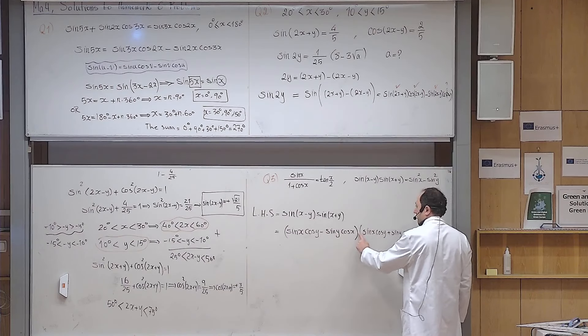By the conjugate rule it becomes the first term squared minus the second term squared: (sine x cosine y)² − (sine y cosine x)², which equals sine²x·cosine²y − sine²y·cosine²x. You can see on the right-hand side we need only sines — so the strategy is to get rid of cosines in favor of sines.